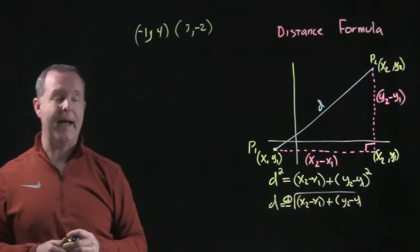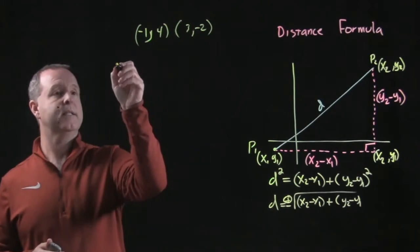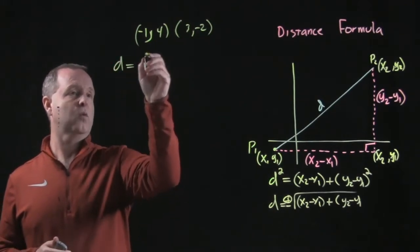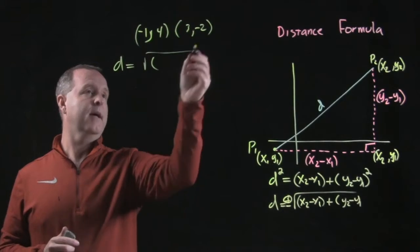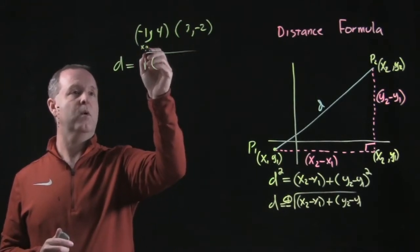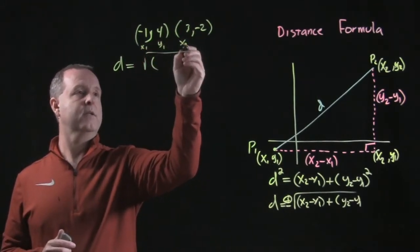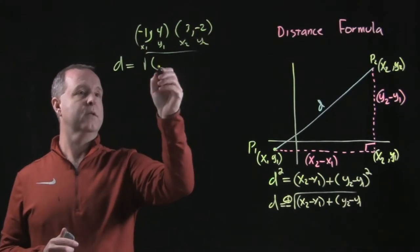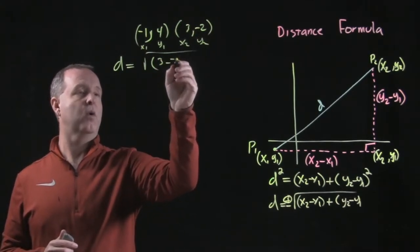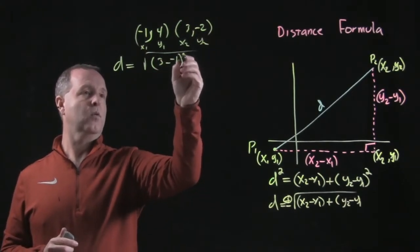It's just a simple matter of plugging away. So distance equals the square root of x2 minus x1. Let's label these x1, y1, x2, y2. So 3 minus negative 1 squared.